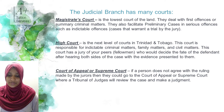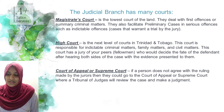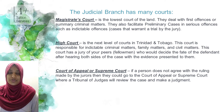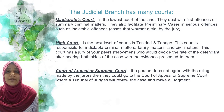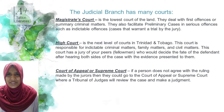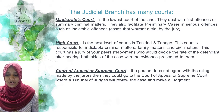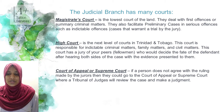The final court underneath the judiciary is the Court of Appeal, also known as the Supreme Court. If a person does not agree with a ruling made by jurors, they can go to the Court of Appeal or Supreme Court, where a tribunal of judges will review the case and make a judgment. Sometimes you may not be happy with results from the Magistrate Court, Family Court, or Privy Council, so you go to the Court of Appeal to try to change the ruling - though sometimes you may end up with less than what you originally received. Those were the six types of courts found underneath the judiciary.